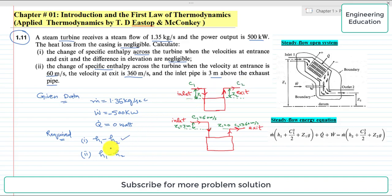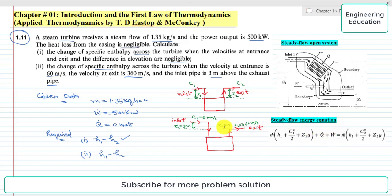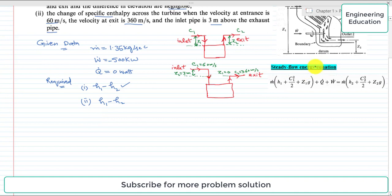For the first case we will find h1 minus h2. For the second case, there is a difference in elevation: z1 is zero so z2 will be 3 meters above the exhaust pipe, c1 is 60 meter per second, and c2 is 360 meter per second. This is a general steady-flow open system, and we will apply the steady flow energy equation to solve this problem.